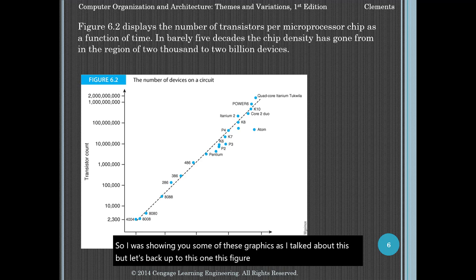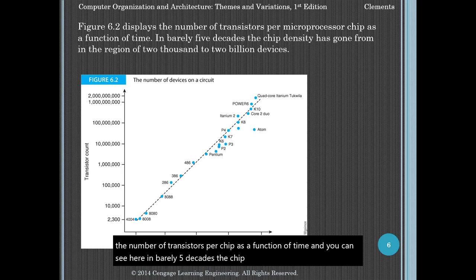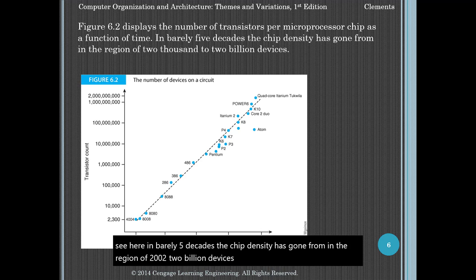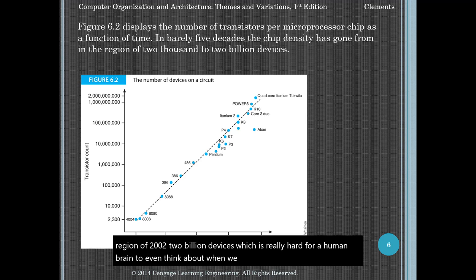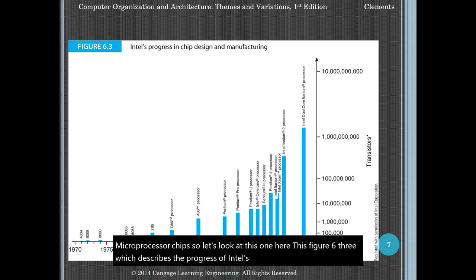Figure 6.2 displays the number of transistors per chip as a function of time. In barely five decades, the chip density has gone from in the region of 2,000 to 2 billion devices — which is really hard for a human brain to even think about when we look at these microprocessor chips. Figure 6.3 describes the progress of Intel's mainstream microprocessors specifically, and the Intel chip is what powers most of the world's personal computers.